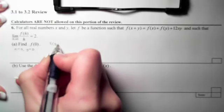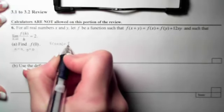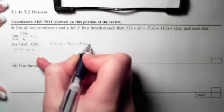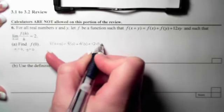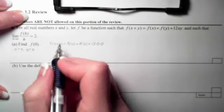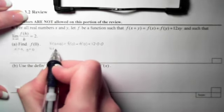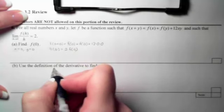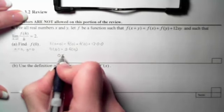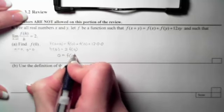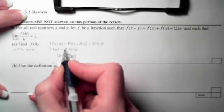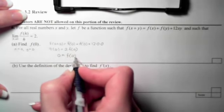Because when we do that, we're going to get an f of 0 on this side and f of 0 is over here. So my first step in part A is let x equal 0 and y equal 0. Then I will have f of 0 plus 0 equals f of 0 plus f of 0 plus 12 times 0 times 0. If I simplify that, I will get f of 0 equals two f of 0's. So if I combine my like terms, I'll get 0 equals f of 0.